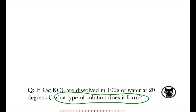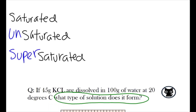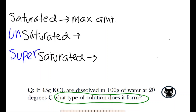But what type of solution does this form? Well, there are three types of solutions that we can choose from: saturated, unsaturated, and supersaturated. A saturated solution describes a solution that has the maximum amount of solute dissolved, in that it cannot dissolve any more solutes. You can think of a saturated solution as being a soaking wet paper towel — the paper towel can no longer absorb any more water, and therefore it is saturated with water.